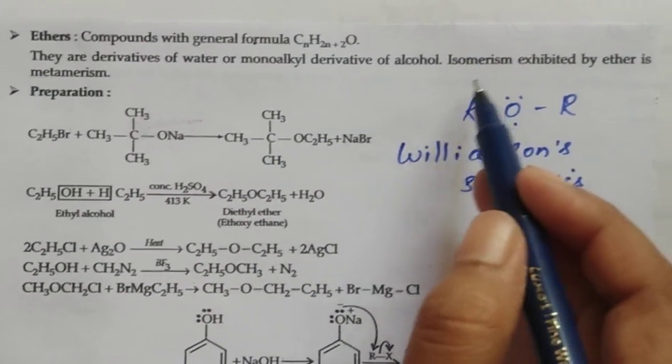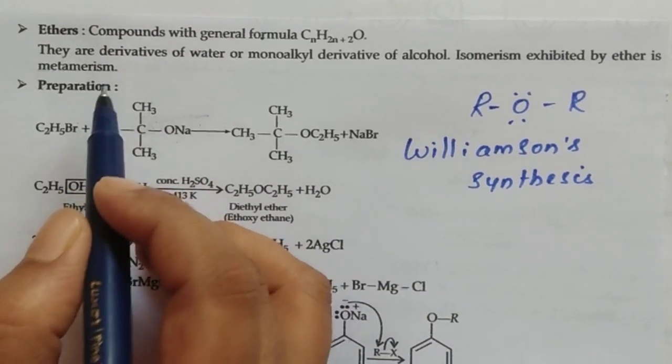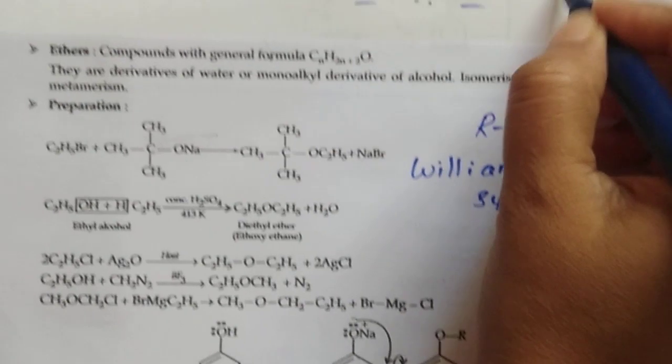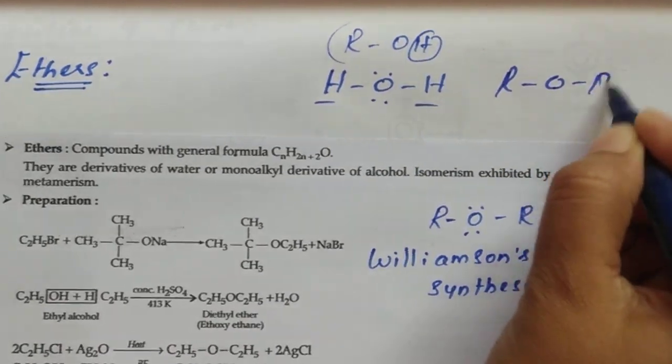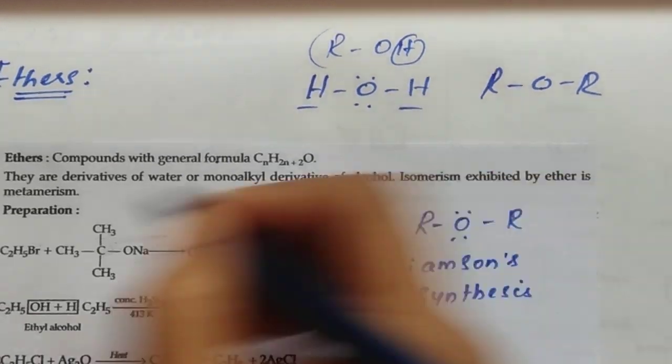So ethers exhibit isomerism, generally it shows metamerism. The number of alkyl groups differs in this. That is, symmetrical and asymmetrical ethers form metamerism.